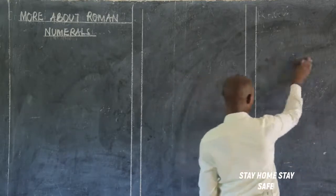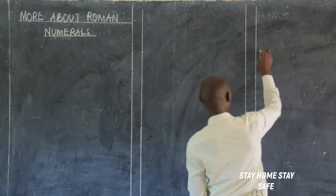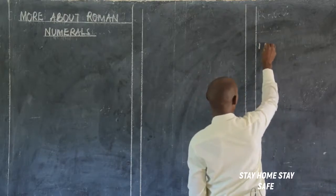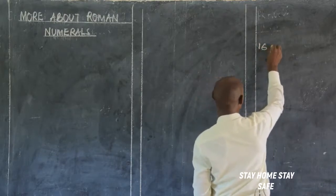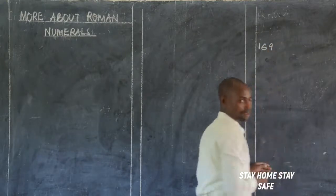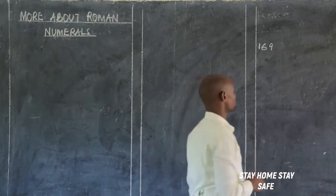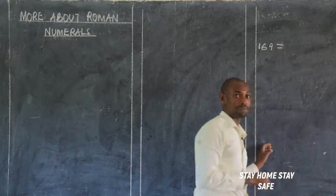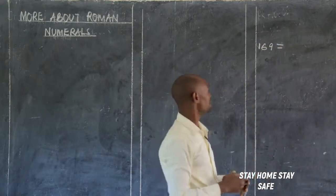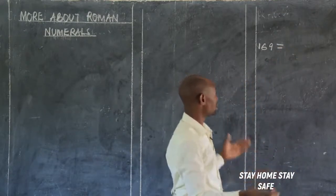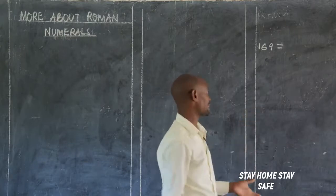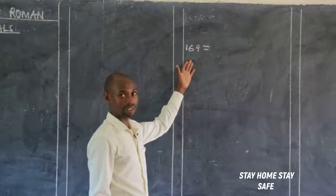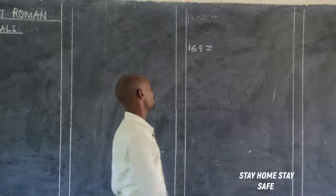Let's remind ourselves: if you are told to write, for example, 169 in Roman numerals, what do you do? The first step is to expand. You expand horizontally or vertically. If I expand this number horizontally, what shall we have?